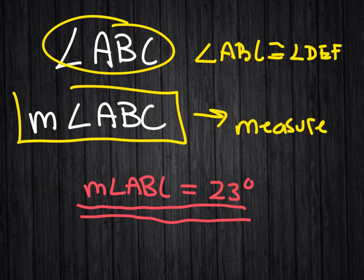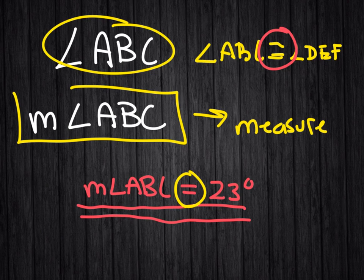So, objects get named to be congruent and measurements get named to be equalities.